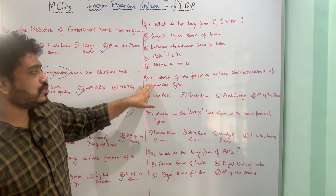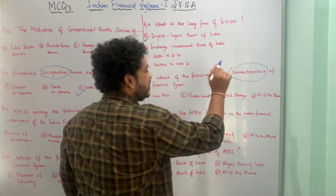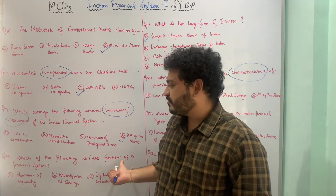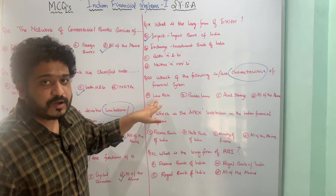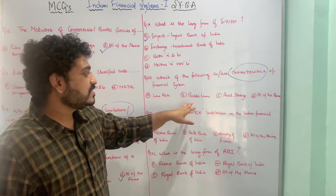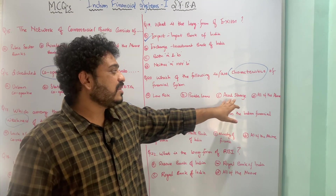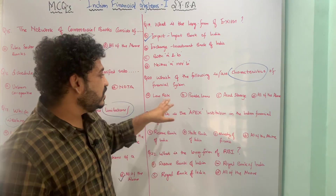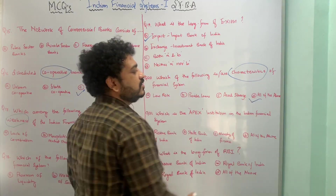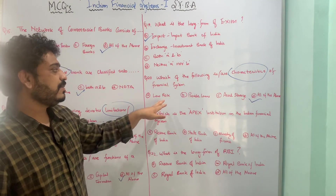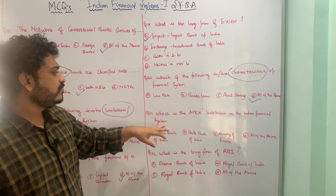The next MCQ asks which of the following are characteristics of a financial system. Option A is low risk, B is provides loans and advances, C is asset storage, and D is all of the above. All three are characteristics of a financial system, so the correct option is D — all of the above: low risk, provision of loans and advances, and asset storage.